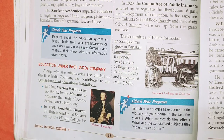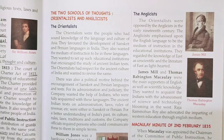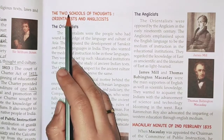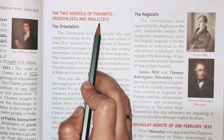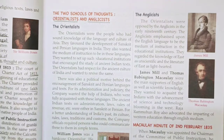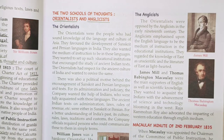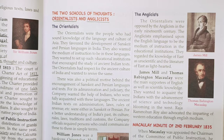That is what we discussed in our previous video. In today's video we will talk about the two schools of thought — the Orientalists and the Anglicists. There were two groups of people: some were Orientalists and the others were Anglicists.